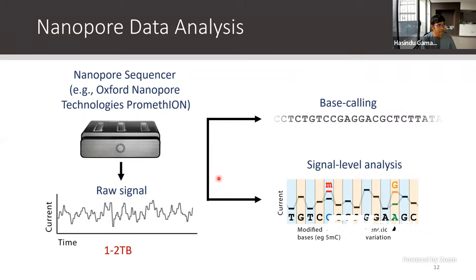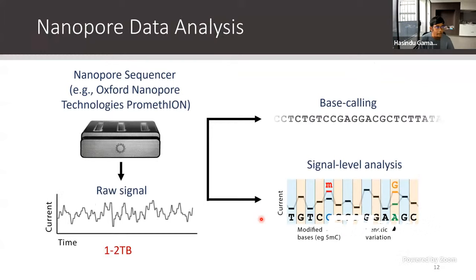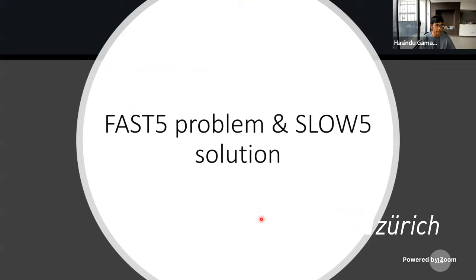Oxford Nanopore Technologies used a file format called Fast5 to store this data. This had problems, and we solved them by developing a format called SlowFi. From 2017 to 2019, problems with the Fast5 format were apparent. It's based on a format called HDF5, originally developed in the 1990s for storing heterogeneous data. Nanopore decided to use this format to store nanopore signal data, which is more homogeneous — for some unknown reasons. One technical problem was that HDF5 is not multi-threaded; there is a thread-safe version, but internally they protect global data structures with a lock, so even with multiple threads only one thread accesses the data at a time.